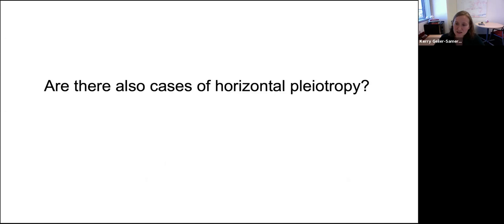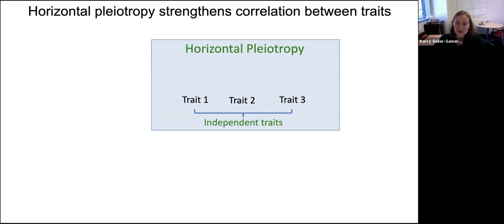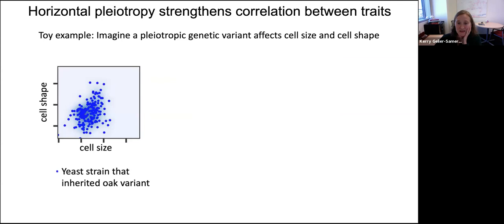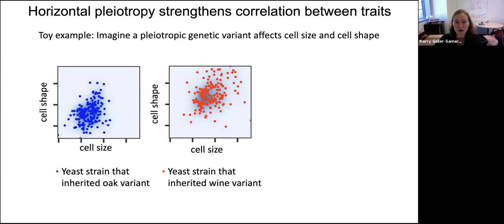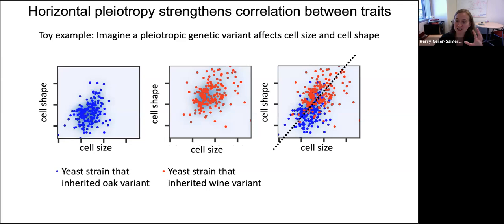Now I want to dive a little deeper into horizontal pleiotropy — the type natural selection should be able to purge from genomes. To detect it, a method we use is based on the intuition that horizontal pleiotropy should cause independent traits to appear related. For example, if a genetic variant affects cell size and cell shape, yeast inheriting the oak version might have small size and shape, while wine-version cells have larger size and shape. In both subpopulations, size and shape aren't very correlated. But across the merged population, these two traits appear to have a stronger correlation — that's how horizontal pleiotropy increases the correlation between traits.